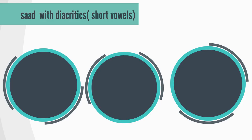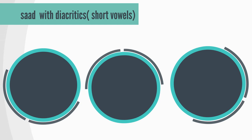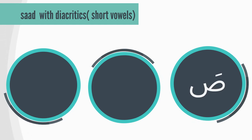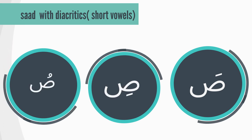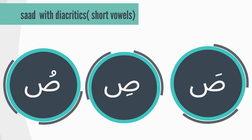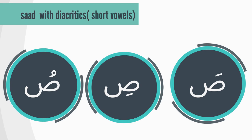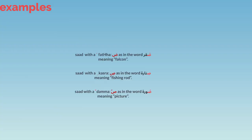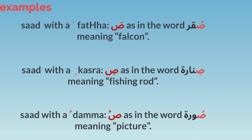Now let's read Harfu al-Saad with short vowels: sa, si, su. Let's read some examples. Saad with fatha — 'sa' as in the word 'sakur.' Saad with kasra — 'si' as in the word...